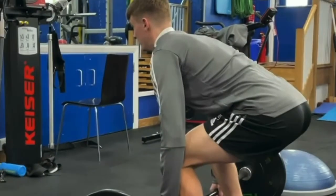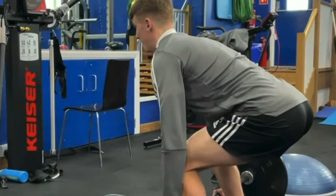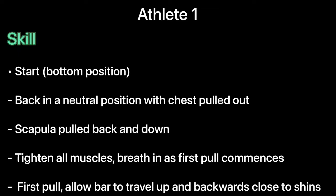With the use of bumper plates and extra load on the bar, the athlete can now achieve a neutral back position. The scapula is pulled back and down and the chest is visible from the front, with the arms straight and the hips higher than knees in the first pull. For athlete one, once the athlete knew to pull himself into the bar, tighten core muscles, and breathe in and brace, the scapula was then pulled back and down and the neutral back position was achieved. The first pull allowed the bar to travel up and slightly backwards and close to the shins.